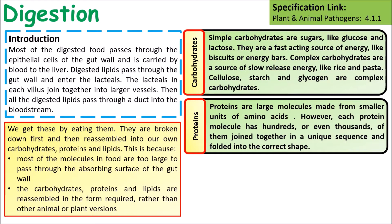Proteins are large molecules made up of amino acids. Each protein is made up of hundreds of amino acids and folds up into the correct shape. Our body needs the amino acids from protein to make different proteins within cells.